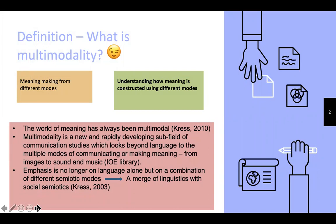The world of meaning has always been multimodal — so that is what Kress says. It means that in this world, we do not only depend on language to make meaning, but we also make use of other semiotic modes in delivering our messages to others.